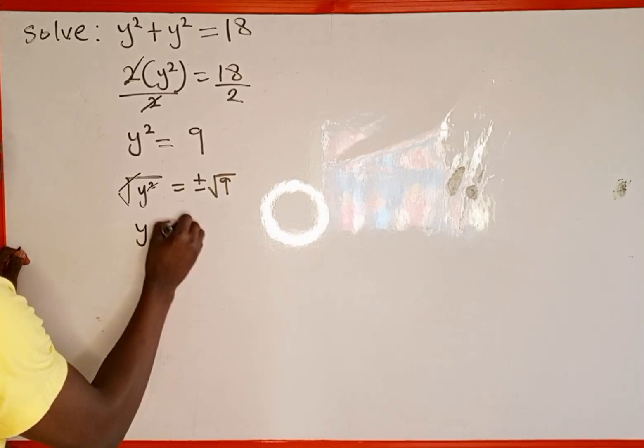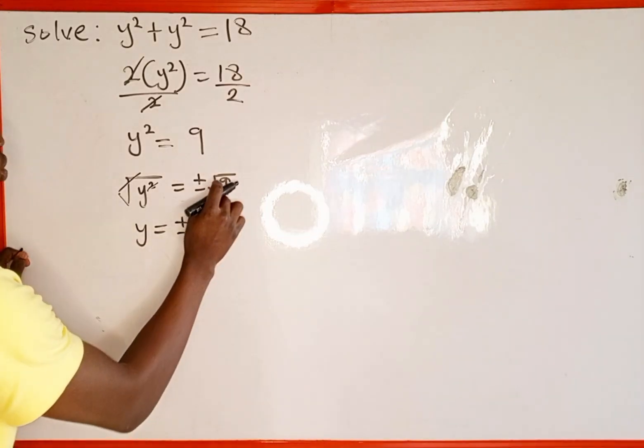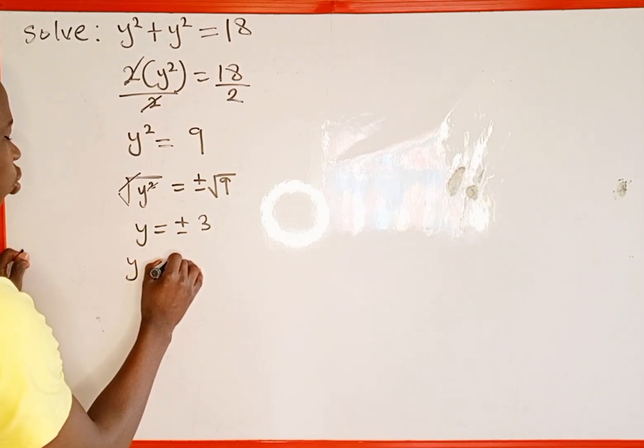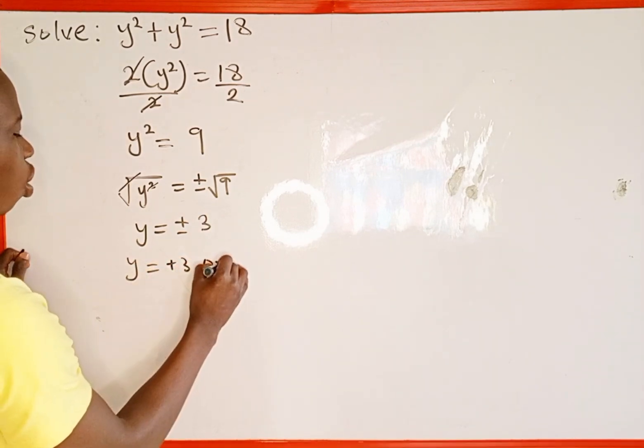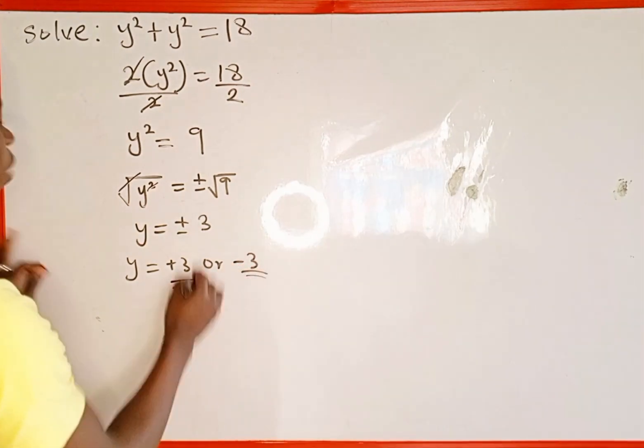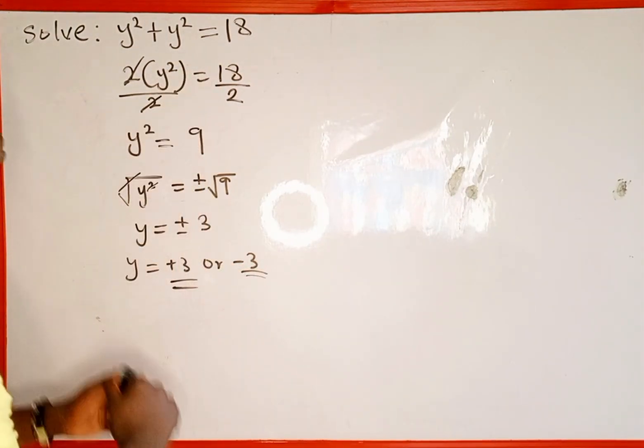Now this square is going to cancel out the square root. We are left with y which is equal to positive or negative square root of 9. Square root of 9 is 3. So therefore y is equal to positive 3 or y is equal to negative 3. This is the total value of y that satisfies this quadratic equation.